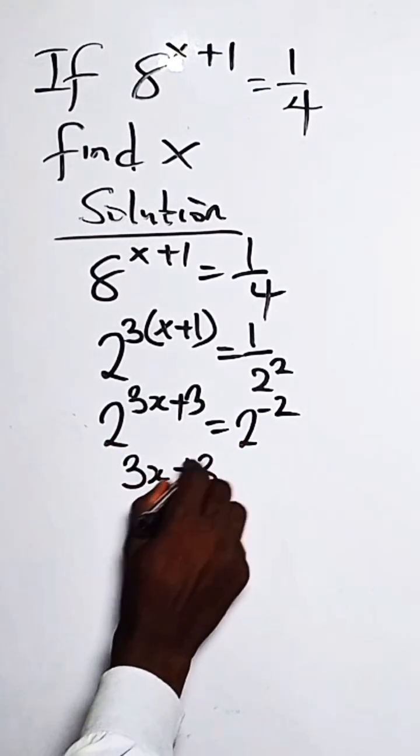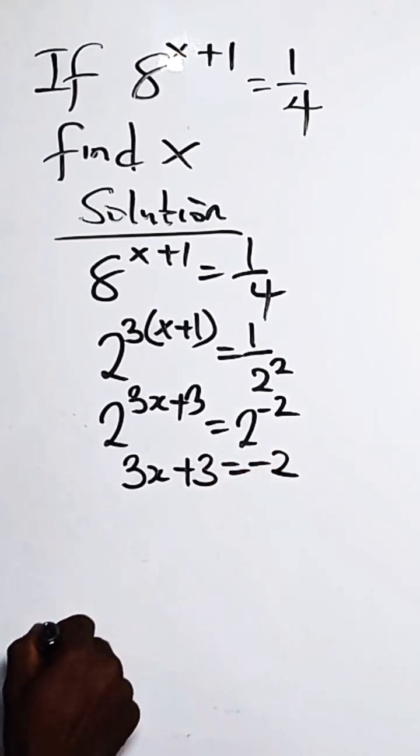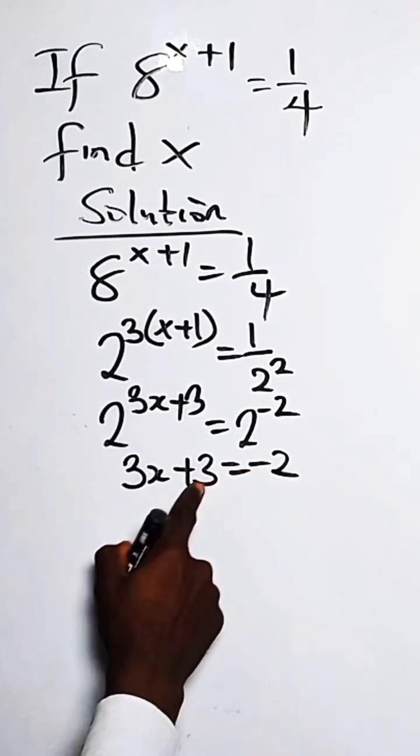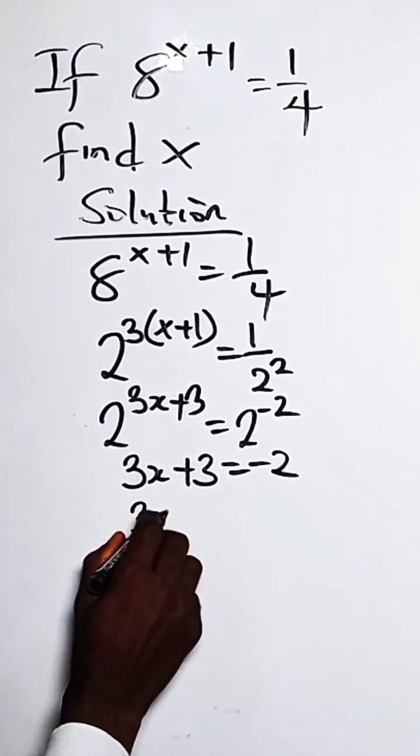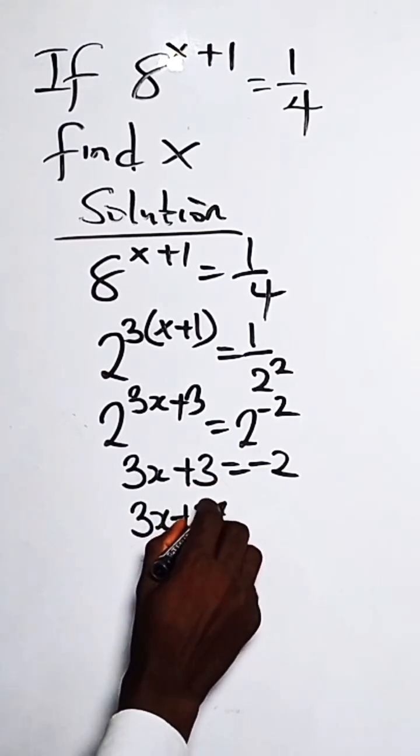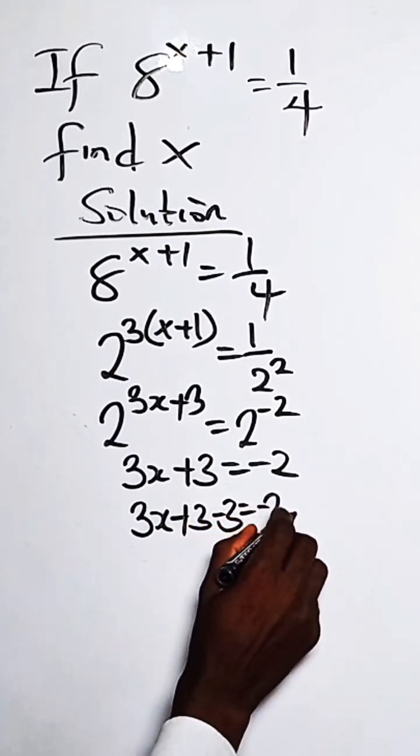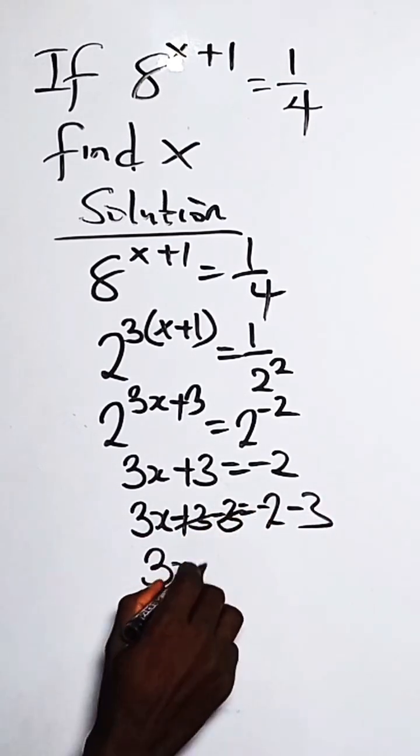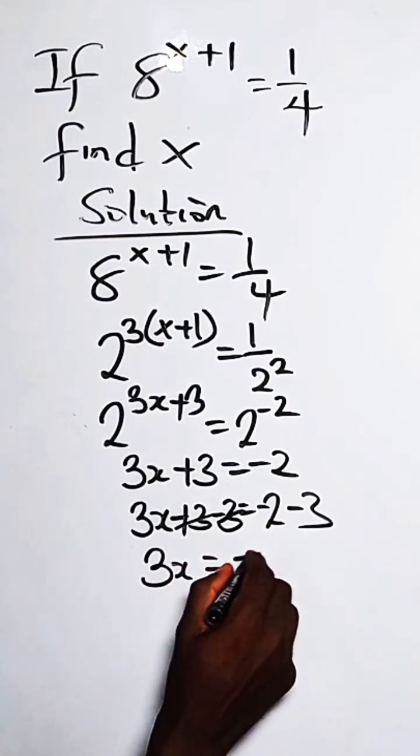We can collect the like terms by subtracting 3 from both sides. So we have 3x plus 3 minus 3 equals minus 2 minus 3. This gives us 3x equals minus 5.